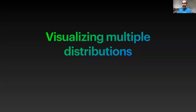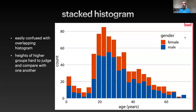Welcome back. In the last video, we were talking about how we visualize distributions of data using histograms and density plots. In this video, we're going to follow along on that topic and think about how we visualize multiple distributions together in order to compare datasets. Here is that same dataset we were looking at before, which was the distribution of age data from the Titanic.